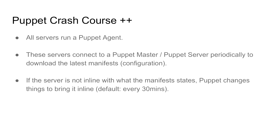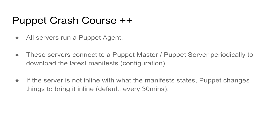From an infrastructure point of view, every server runs a Puppet agent, and these agents connect into a Puppet master to periodically download their configuration. It's not so much downloading a script and executing it — it's more about checking the current intended state of configuration, checking what config is on the server, and bringing the server in line with that intention. By default, that takes place every 30 minutes.